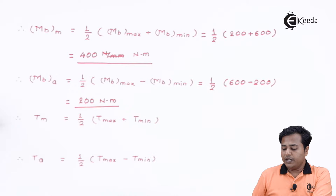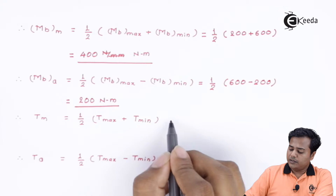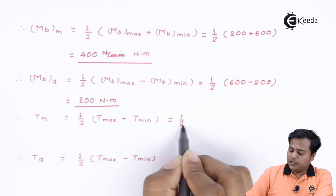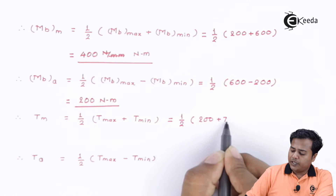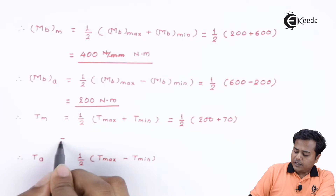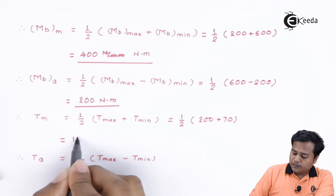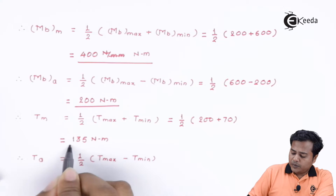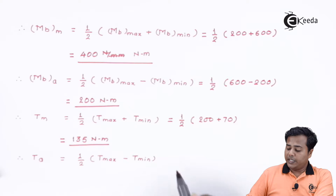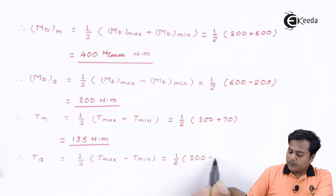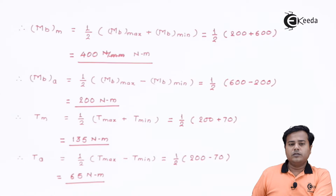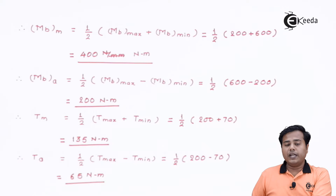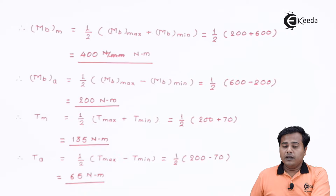Let us now repeat the same procedure for the torsional moment. In the case of torsional moment, the maximum value is 200 Nm and the minimum value is 70 Nm. After solving, the mean torsional moment comes out to be 135 Nm. We then find the amplitude value as well. So we have now found four different values — mean and amplitude for both bending moment and torsional moment.